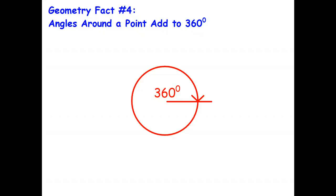Hello students. In this video we'll look at the fourth geometry fact, which is angles around a point add to 360 degrees. So if you have two straight angles, what you end up with is 360 degrees, and that basically covers every single angle around a single point. So there's the coded reason for it — angles around a point, there's the point there, add to 360.